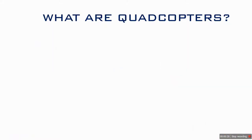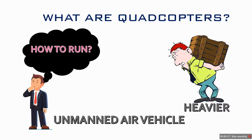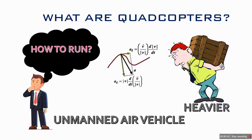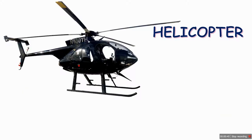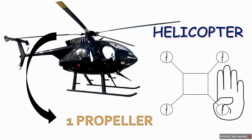To define quadcopters, I will say that these are unmanned air vehicles which are heavier than air and run on the basic principles and theories of mechanical physics. Quadcopters are quite similar to the helicopter. In the helicopter we use one propeller system, and in a quadcopter we use four similar kinds of propeller-motor systems.